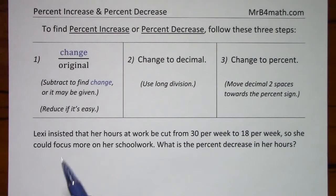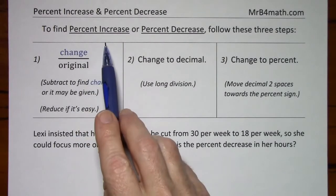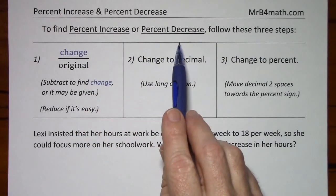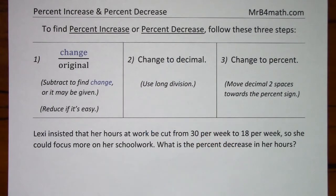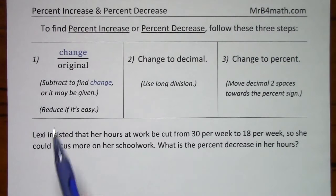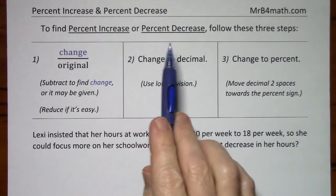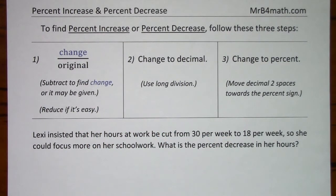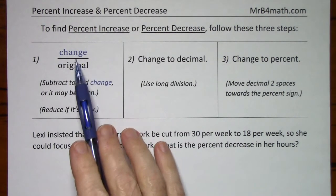If you're given a problem where you're asked to find the percent increase or percent decrease, it will be stated specifically, as in this example. For something to increase or decrease, you'll have an original amount and a new amount. You'll have to identify the change.